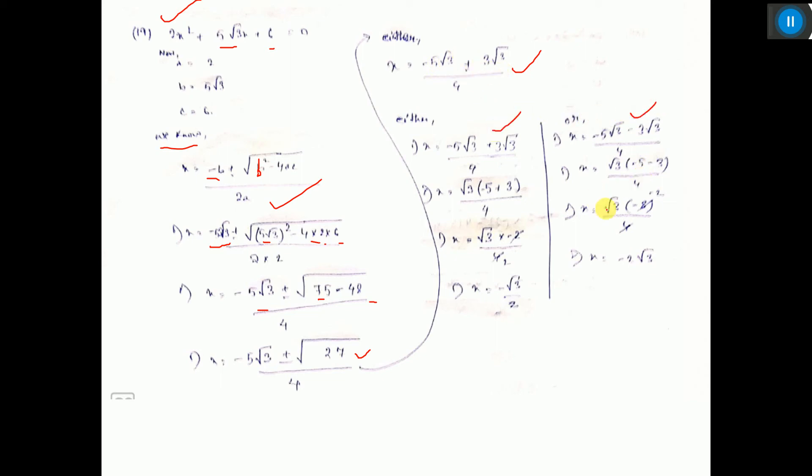So this is minus 8 root 3, that is minus 2 root 3. And here you are getting minus 2 root 3. This is cancelled, so minus root 3 by 2. That is the answer.